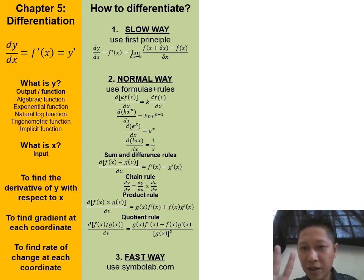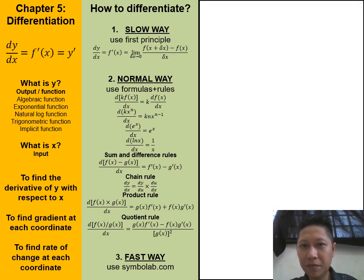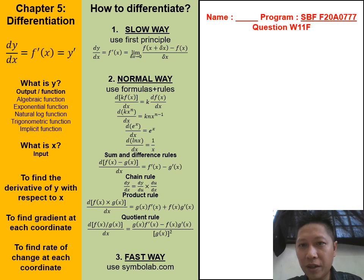You're going to prepare two pieces of A4 paper, and then you're going to answer a total of four questions. Means that one paper, two questions. In another paper, two questions. At the first piece of paper, write your name and also your student ID and your program. And then write down the question W11F.